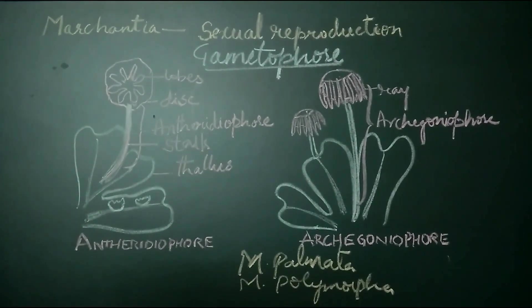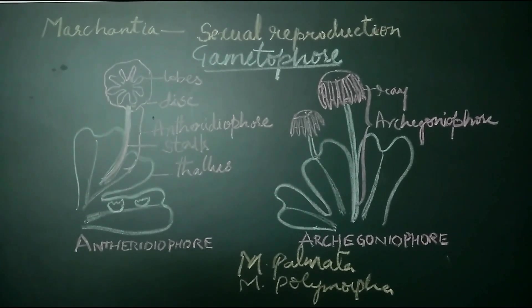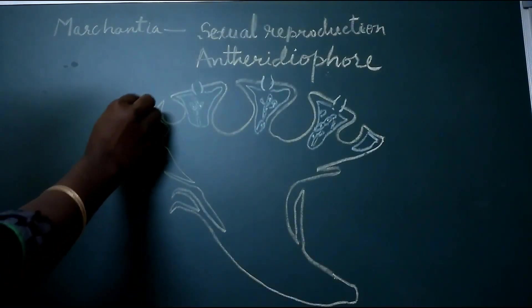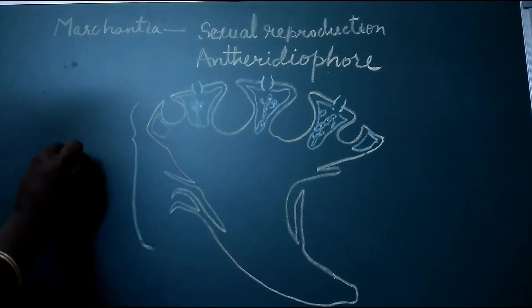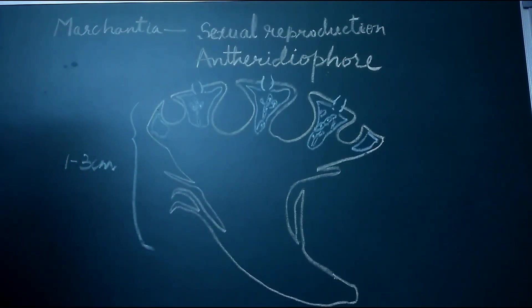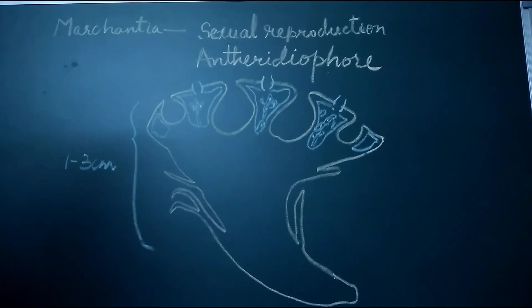Let us now learn about the structure and development of the antheridiophore. The antheridiophore is one to three centimeters in length, and the stalk bears a slightly convex, eight-lobed peltate disc. The vertical section of the peltate disc is similar to that of the thallus.